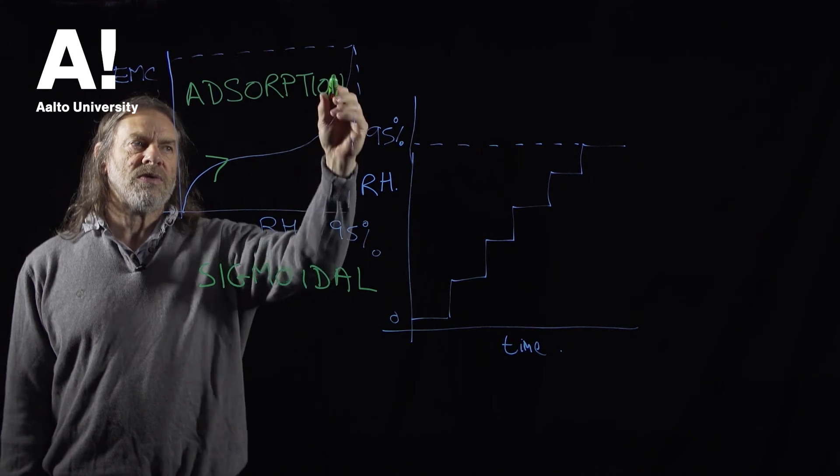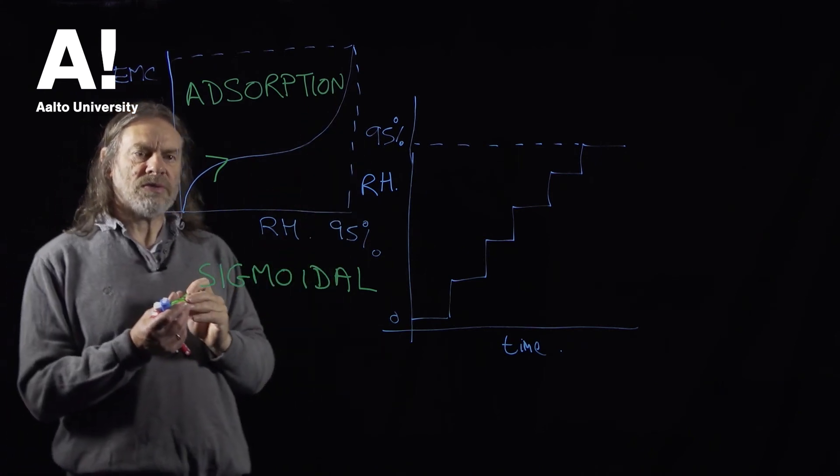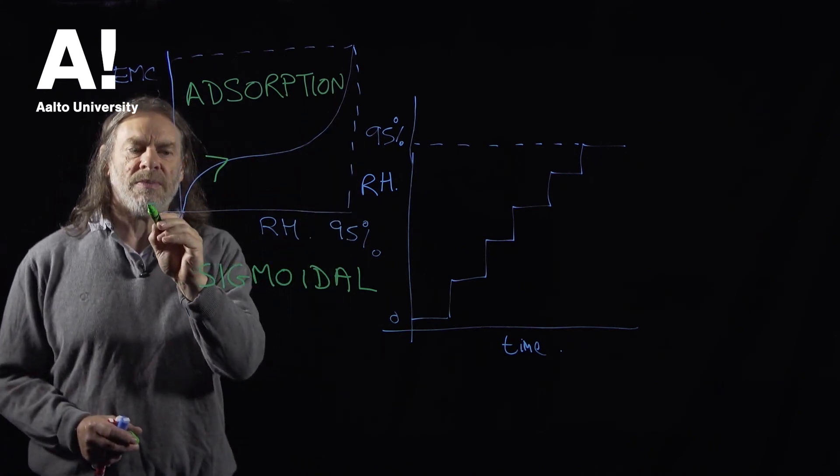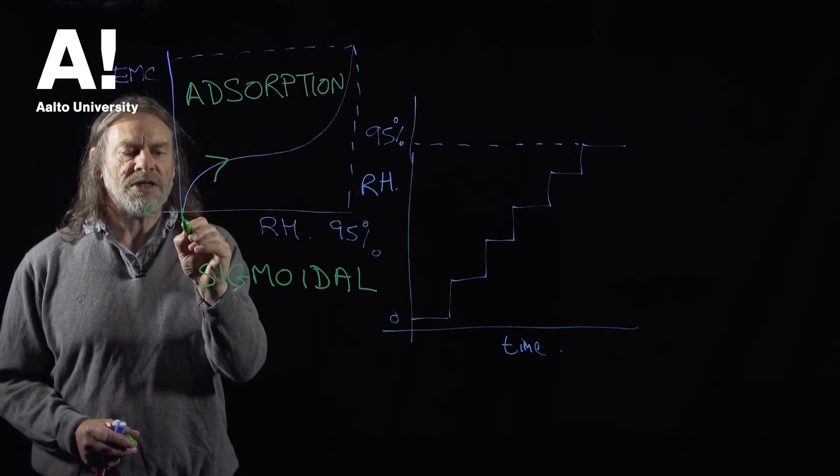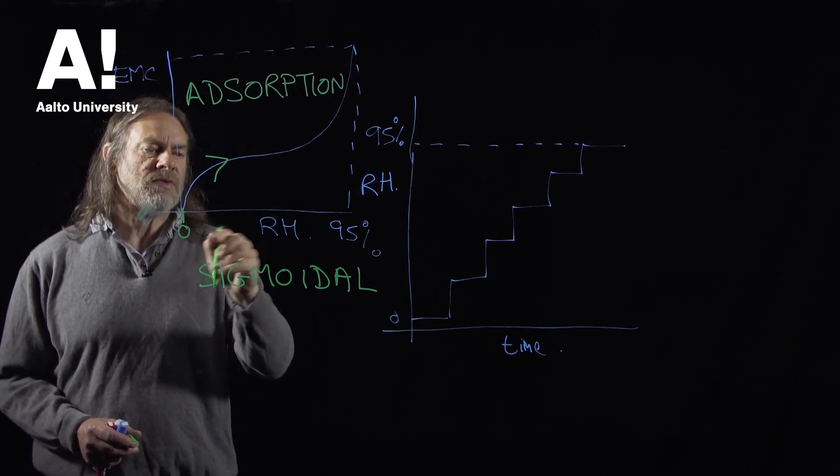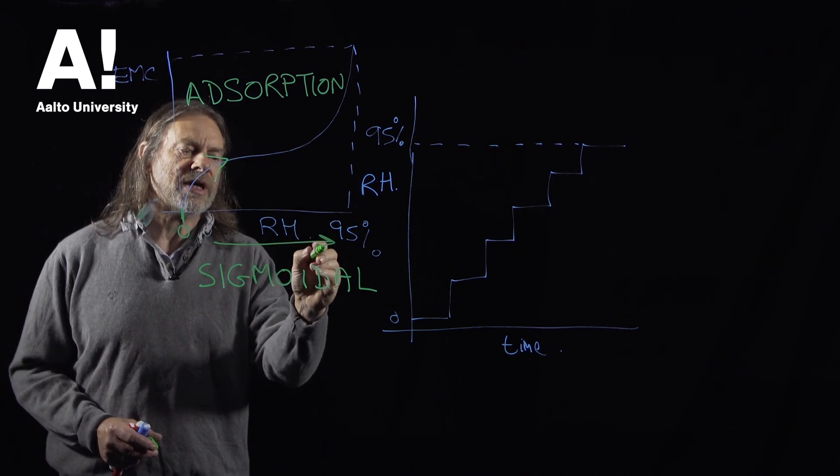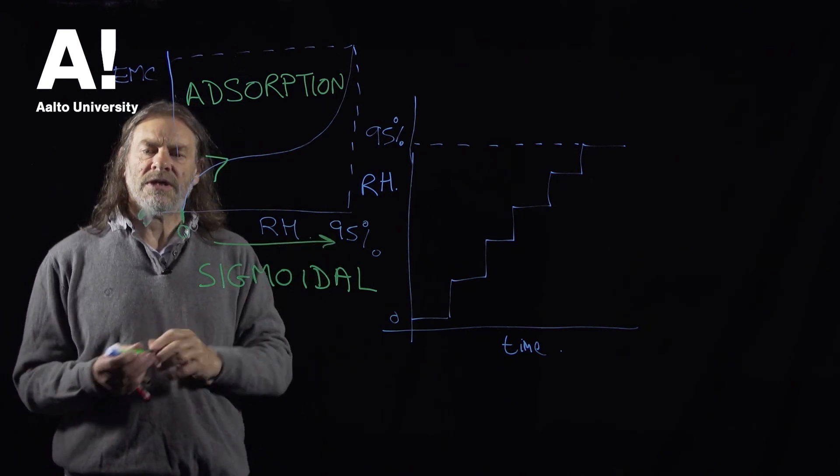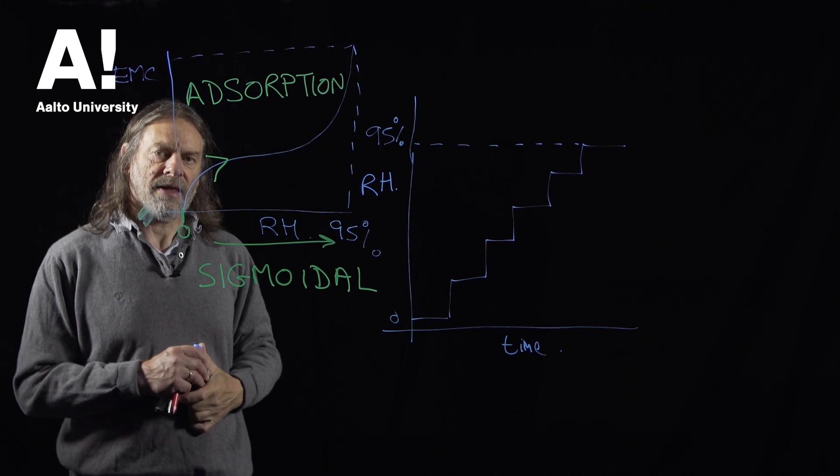So these are water molecules that are going into the wood until we reach equilibrium. We're stepping up from a relative humidity of zero up to a relative humidity of 95%. So we're going in that direction. That's the shape of the curve that we get.